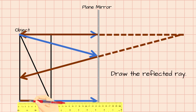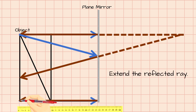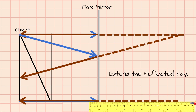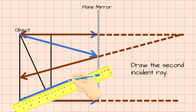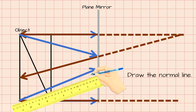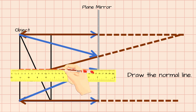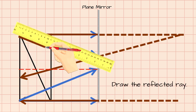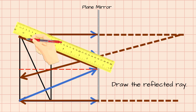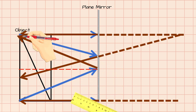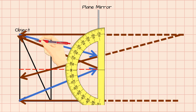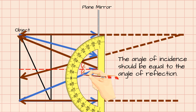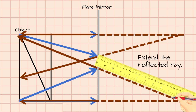Draw an incident ray from the lower point of the object. Draw the reflected ray. Extend the reflected ray. Draw the second incident ray. Draw the normal line. Draw the reflected ray. Make sure that the angle of incidence equals the angle of reflection. Extend the reflected ray.